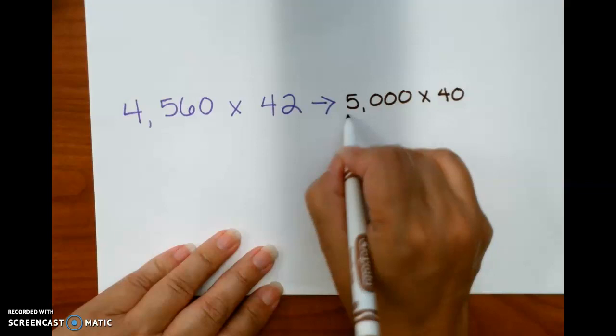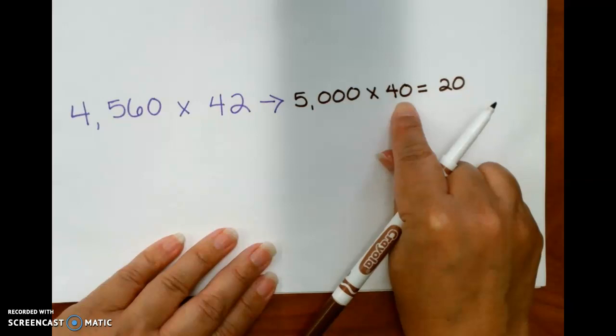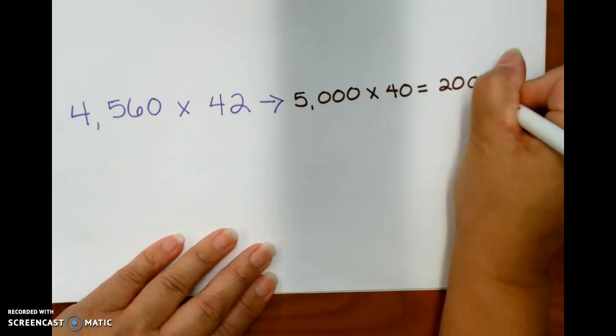And 5,000 times 40, again, 5 times 4 is 20, and then 1,000 times 10 is 10,000. So that gives me 4 more zeros. So 5,000 times 40 is 200,000.